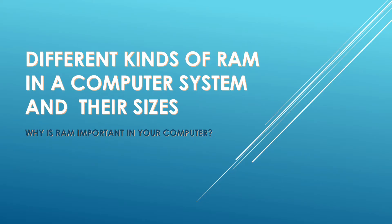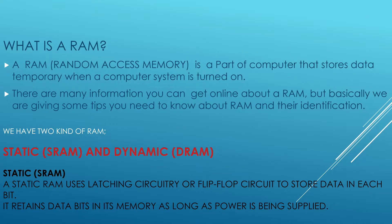Hello viewers, today we are going to look at different kinds of RAM in your computer system and their sizes. We'll also talk about why RAM is important in your computer. First, we have to know what RAM is. RAM stands for random access memory — it is a part of the computer that stores data temporarily. When a computer is turned on, we are giving some tips you need to know about RAM and their identification.